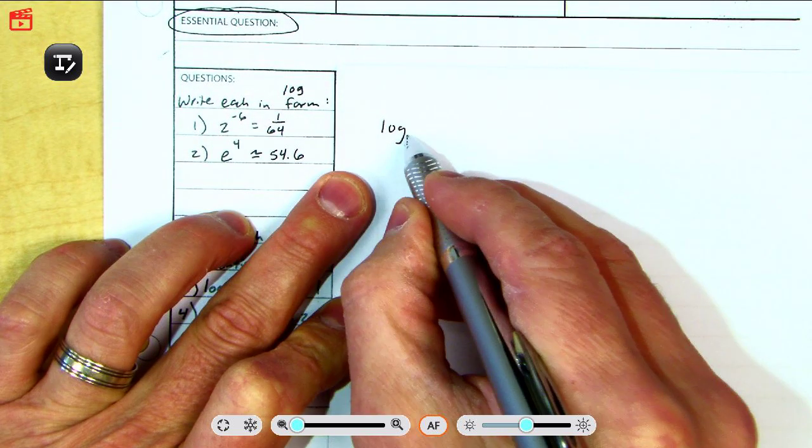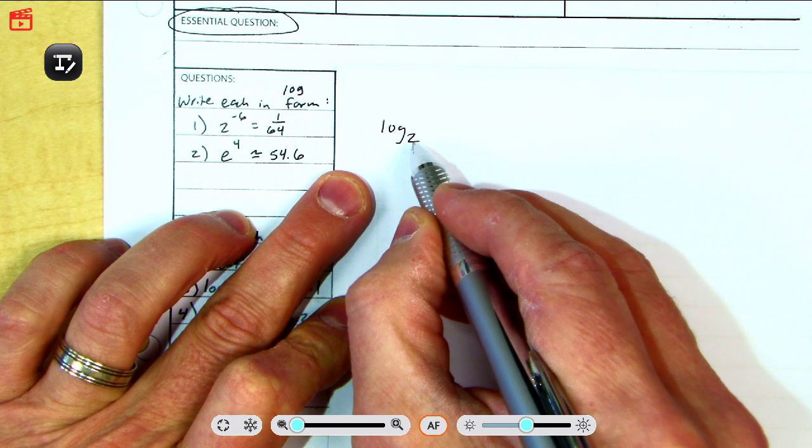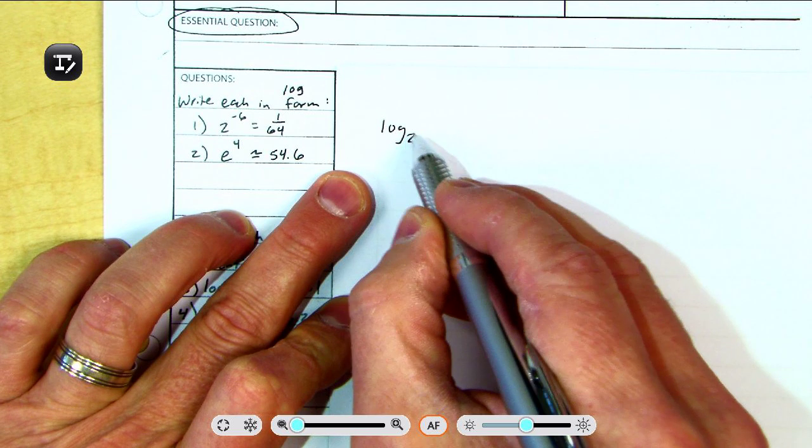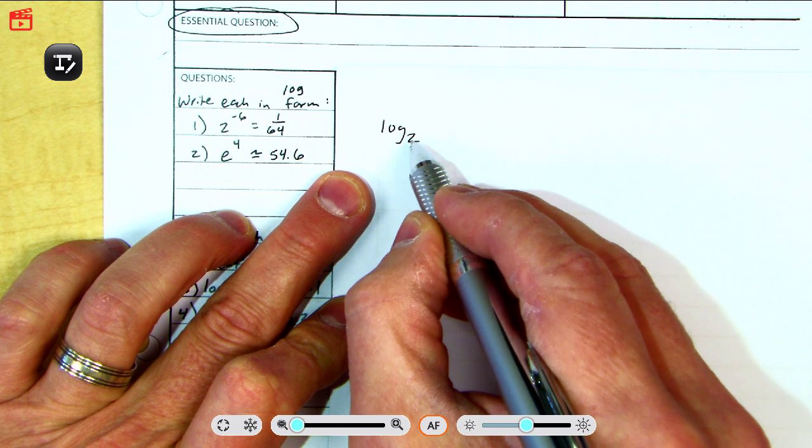Now, notice how you write the 2 down as a subscript. That's very important. For a logarithm, whatever number is written as a subscript is the base of a logarithm.